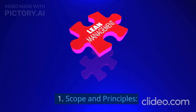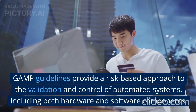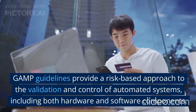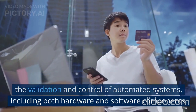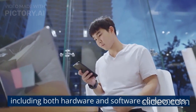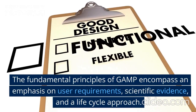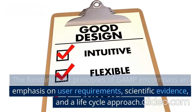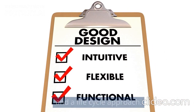Scope and Principles: GAMP guidelines provide a risk-based approach to the validation and control of automated systems, including both hardware and software components. The fundamental principles of GAMP encompass an emphasis on user requirements, scientific evidence, and a lifecycle approach.